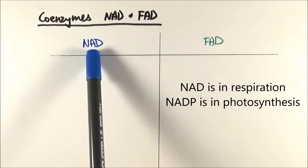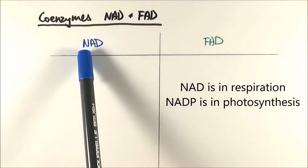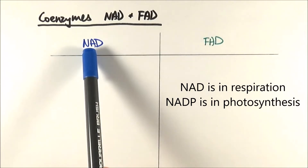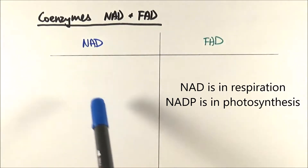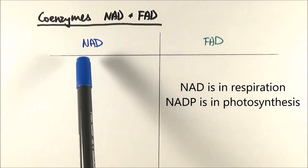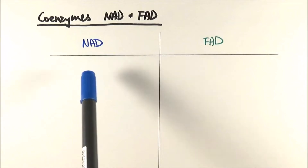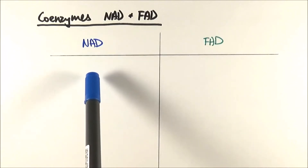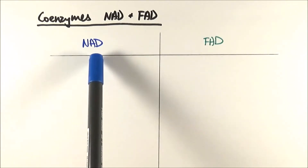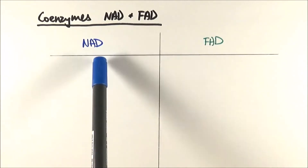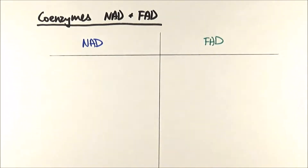Be very careful never to mix up NAD, which is in respiration, and NADP in photosynthesis. They are both coenzymes and they do the same thing of carrying protons and electrons for ATP production, but they are slightly different — so please do not mix them up.